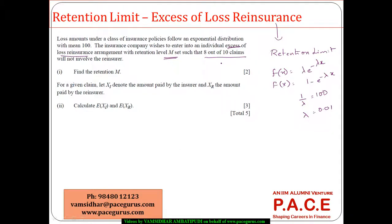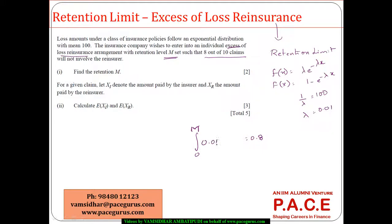The insurance company wishes to enter into an individual excess of loss reinsurance arrangement with retention level M set such that 8 out of 10 claims will not involve the reinsurer — so there is an 80% chance that the insurance company itself will settle the claim. That means integrating the density function from 0 to M should equal 0.8.